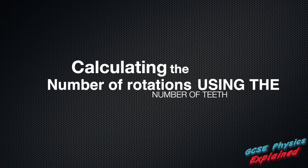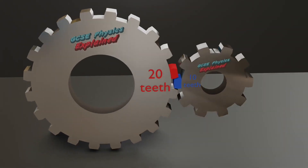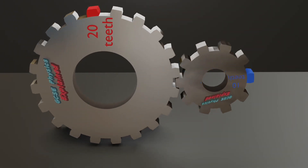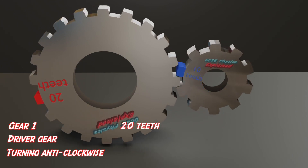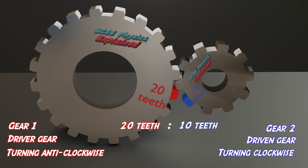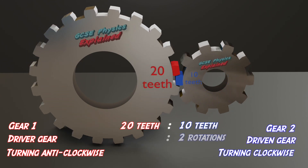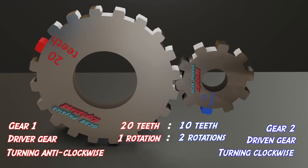Let me show you how to calculate the number of rotations using the number of teeth. Gear 1 has twice as many teeth as gear 2, so gear 2 will rotate two times for every one rotation of gear 1.